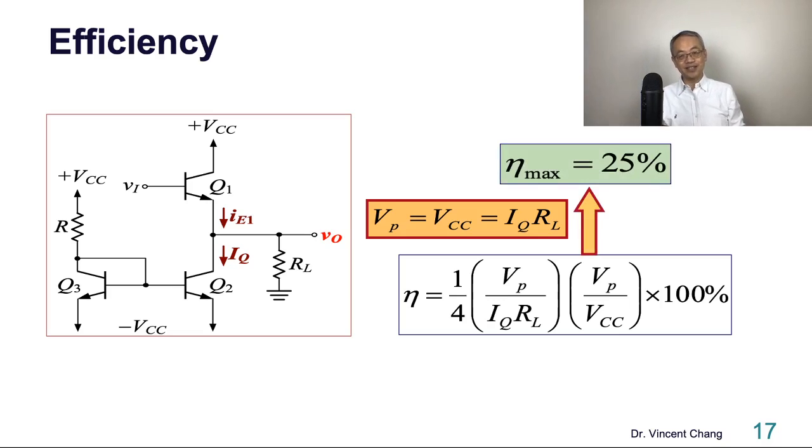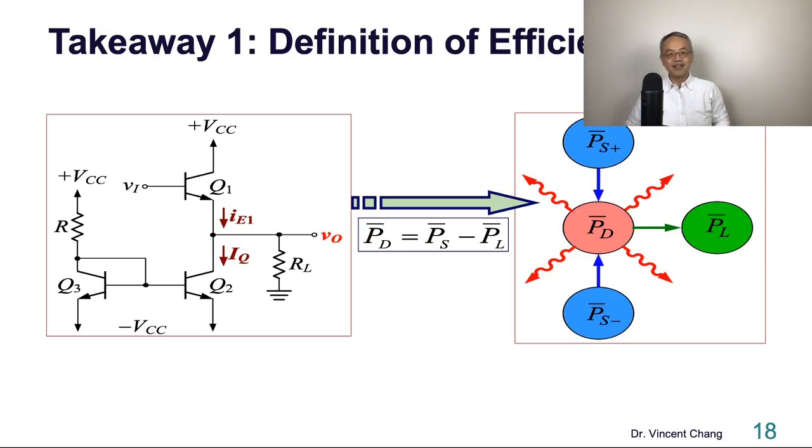25%. What does that mean? That means at least for this kind of amplifier stage, I'm kind of mocking this kind of amplifier stage. At least 75% of the supply got wasted because of the heat. So only as best scenario, only 25% of the supply got delivered to the load. So in the audio amplifier application, let's say the load could be a speaker. Only 25% got delivered to the speaker.